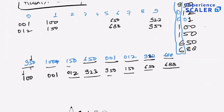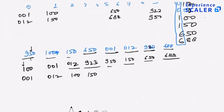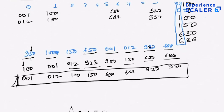Once I append them, all numbers are sorted: 001, 012, 100, 150, 650, 688, 923, 950. This final array is sorted. Why can't we just take the MSB directly? The problem is that within a bucket, if you have multiple numbers — think of when you have a million numbers — you only have 10 buckets based on MSB, meaning every bucket on average has 100,000 numbers.